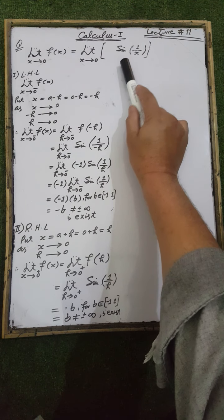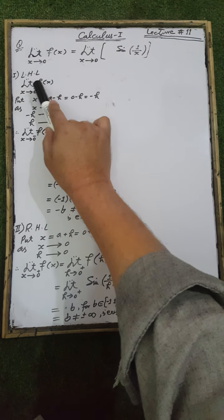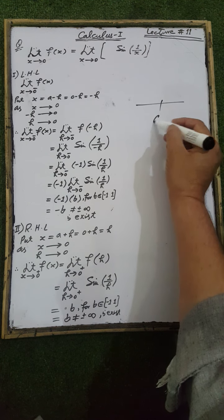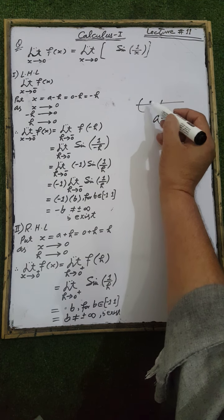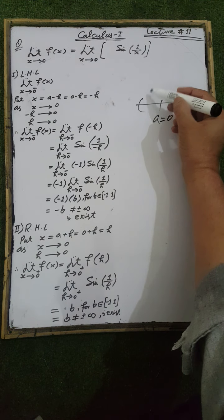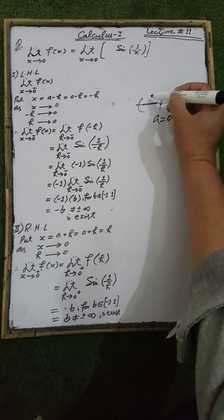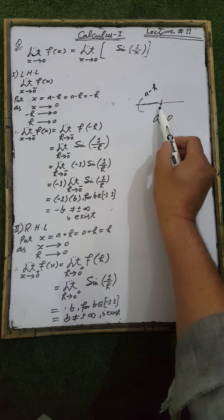Calculate the limit of the function f(x) = sine of 1 over x when x tends to zero. To find the left-hand limit of f(x) at the point a = 0, we consider the neighborhood of a = 0. The left-hand limit is calculated by evaluating the function at the left-hand points of the neighborhood of point a, which are in the form a minus h, so x equals a minus h.